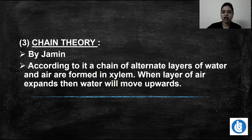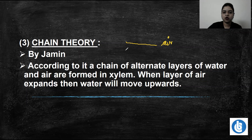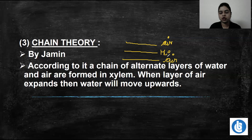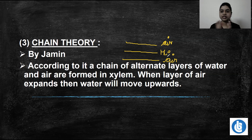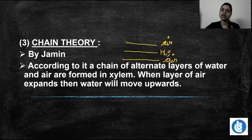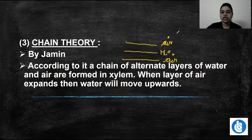So the idea is: one layer has air, the next layer is water molecules, then again a layer of air, then again water molecules — alternate layers of water and air in a rhythm. The layer of air is going to expand, and that expansion is responsible for shifting water molecules upward.